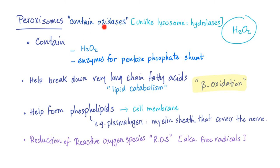Peroxisomes contain hydrogen peroxidase and enzymes for the pentose phosphate shunt. They help break down very long-chain fatty acids through the process of beta-oxidation — this is called lipid catabolism, the breakdown of lipids. That's why the peroxisome is like a gym trainer that helps you break down fat. They also help in the synthesis of phospholipids used in the cell membrane, including a special type called plasmalogen, which forms the myelin sheath that covers your neurons.